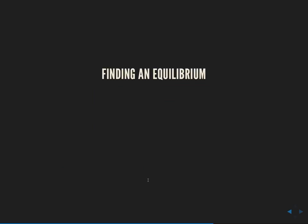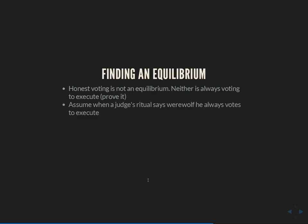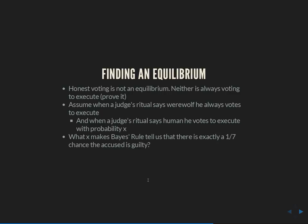That's most of the work. Honest voting is not an equilibrium, and always voting to execute is not an equilibrium either. So we'll guess that an equilibrium is of the form: when a judge's ritual says werewolf, he always votes to execute. But when a judge's ritual says human, he votes to execute with some probability x. Then our question is: what value of x makes Bayes' rule tell us there's exactly a 1-in-7 chance the accused is guilty? At that value, when you condition on being pivotal, you're indifferent between voting to release and voting to convict.